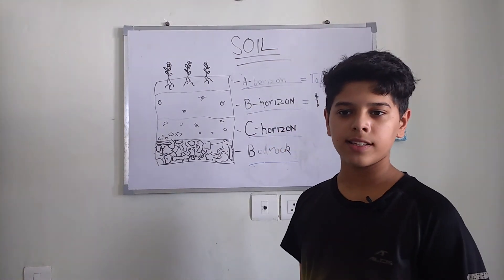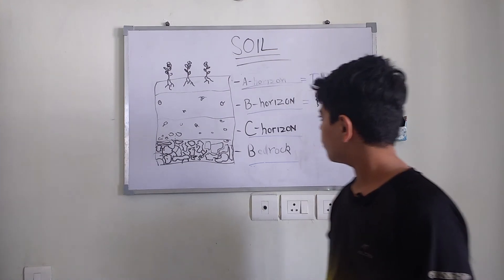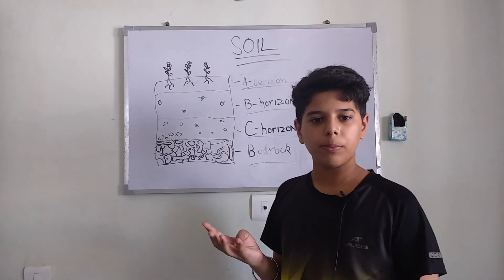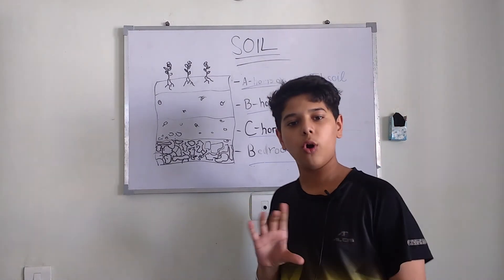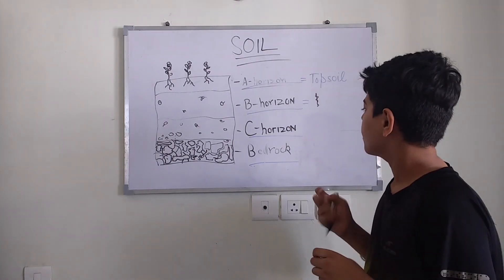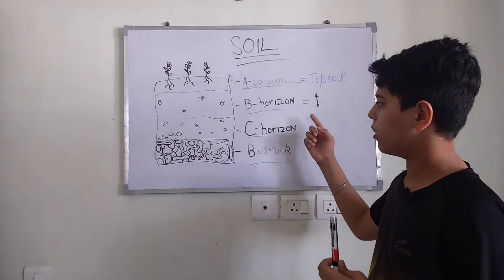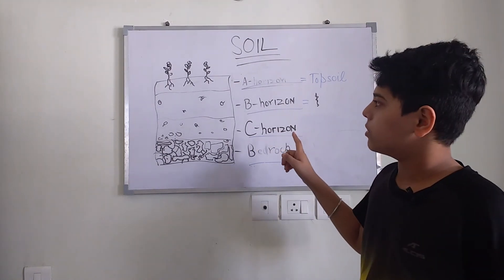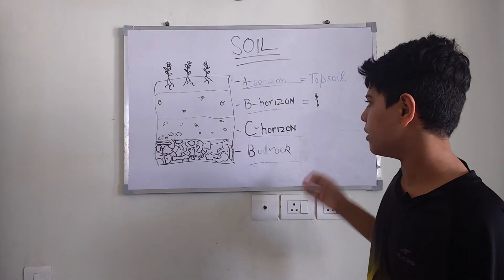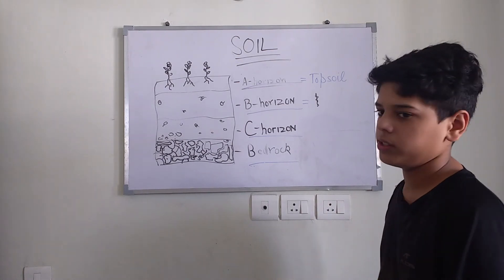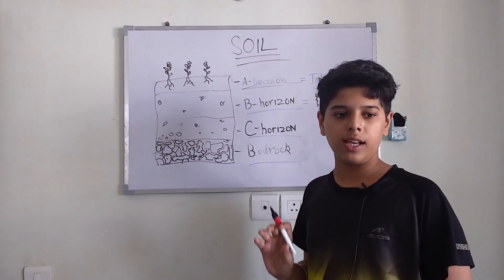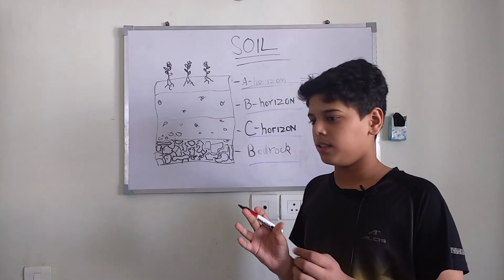This activity is related to this lesson. There will be three to four parts to this video, and after that a video regarding all the activities will be posted. Now covering the B-horizon: one more point — the B-horizon has very less or no humus, so it is not as fertile as the A-horizon.